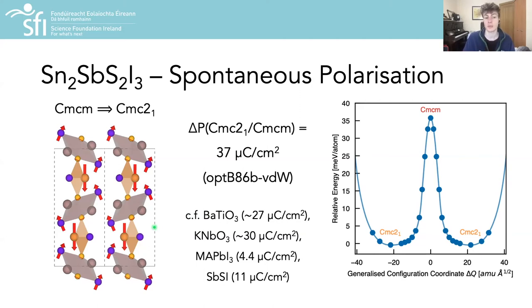We also calculated the ferroelectric switching barrier using the nudged elastic band method in combination with the distortion symmetry method to ensure the minimum energy path between configurations was identified, and in doing so we find a moderate energy barrier to switching of the polarization direction.